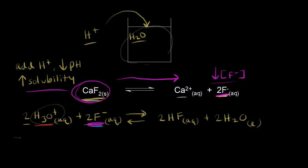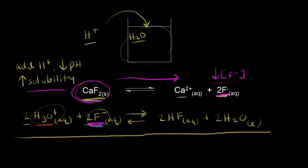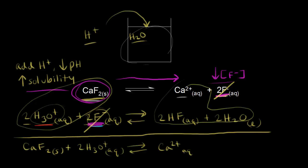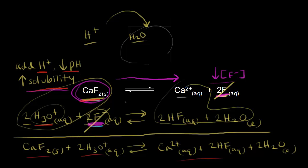We can even write the overall net reaction. The fluoride anions cancel from both sides, giving us: calcium fluoride plus two H₃O plus yields calcium two plus, two HF in solution, and two H₂O. So adding acid to calcium fluoride gives those products. Adding protons, adding acid, or decreasing the pH increases the solubility of this slightly soluble compound.